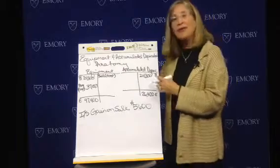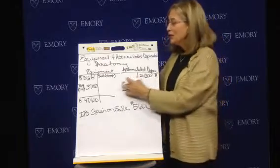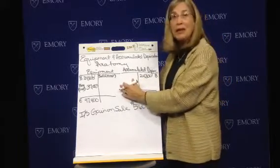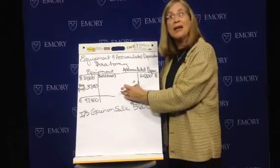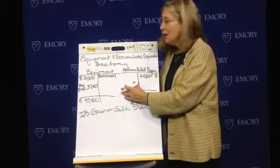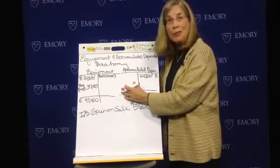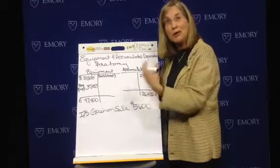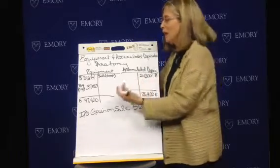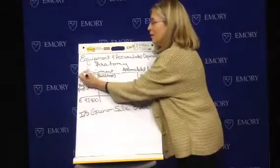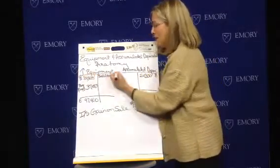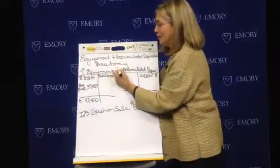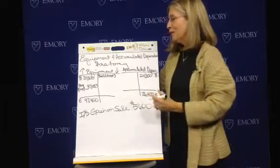The first thing is we know that equipment is an asset — it's a property, plant, and equipment or long-term asset. It's increased by debits and decreased by credits.